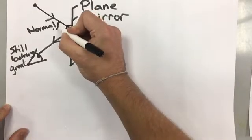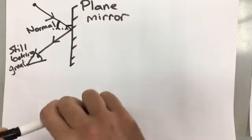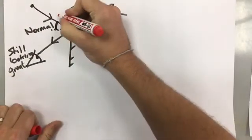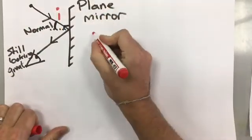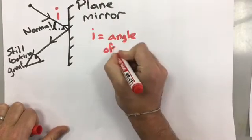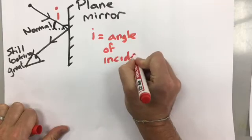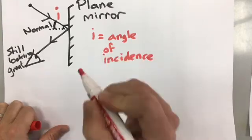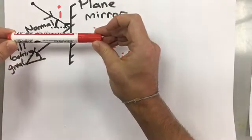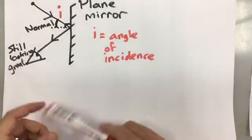This angle here is called the angle of incidence. We call that i. i is angle of incidence. The angle of incidence is the angle from the normal at which the light is coming in towards the mirror. Incidence is the light coming in.